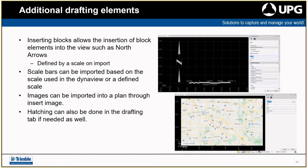Once you've got all the sheets done and sorted, you can put additional drafting elements in. You can call blocks to put in things like north arrows and static elements; the north arrow can be dynamic against the data. You can also import images into the view to have them in the background of your DynaViews so they can be printed. Hatching can also be done in the drafting tab, allowing you to give a solid block color option to an object.